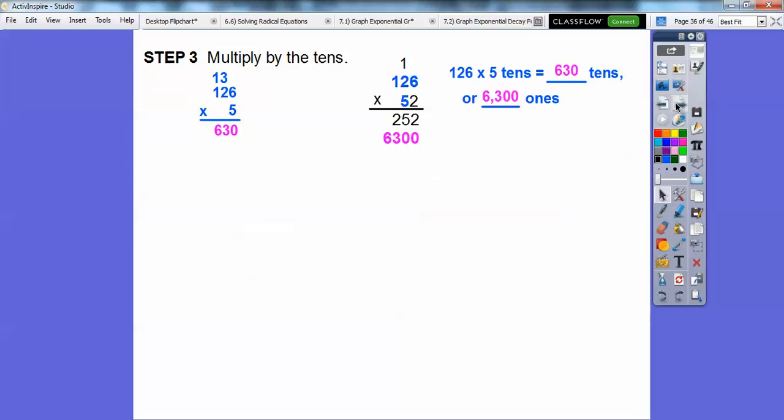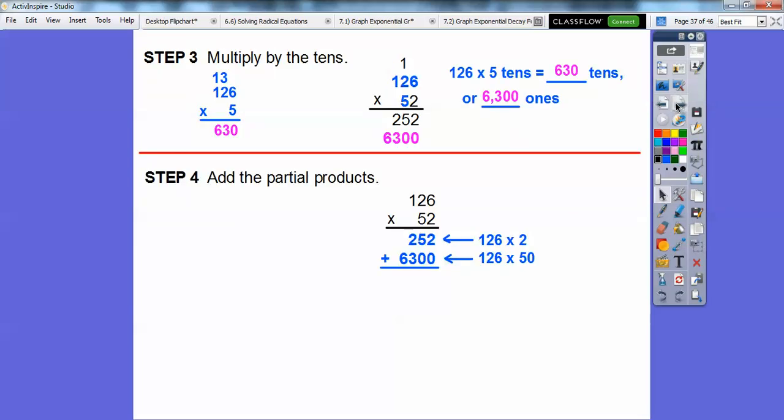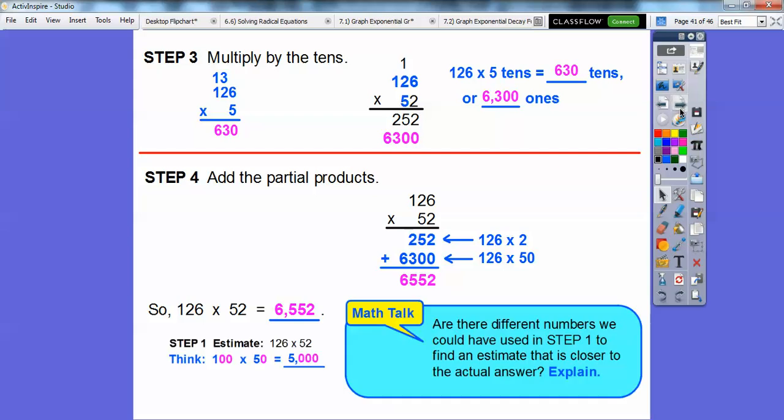Now we're going to go ahead and add those partial products right there. So now we're going to add these numbers. We're going to add 2 plus 0, 5 plus 0, 2 plus 3, and then 6 doesn't have anything to carry. So we get 6,552. So 126 times 52 is 6,552.